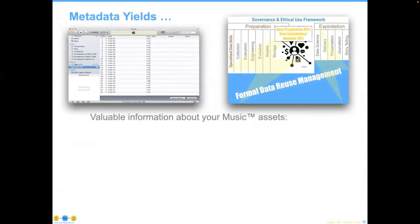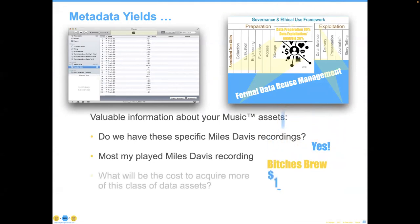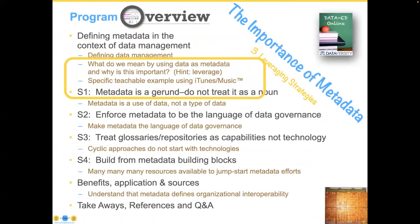Once again, we get back to our metadata yields. It yields valuable information about your musical assets. Do we have this specific Miles Davis recording? Yes. What is my most played Miles Davis recording? It can tell me that. How much does it cost to acquire more Miles Davis recordings? In this case, it was $1.29 a piece. And can I listen to the entire album or playlist before dinner? Not easily in this case, because you can see it is 1.3 hours.